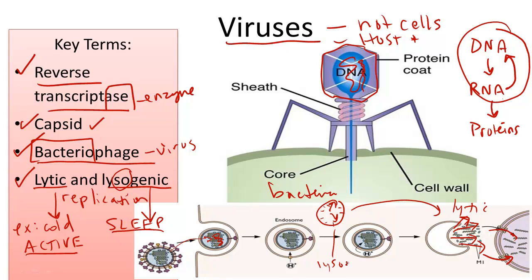So the lysogenic cycle is when the virus is so-called asleep, and it would then enter the lytic cycle. It could perhaps go back to a lysogenic cycle — hence the word cycle. Many viruses are deadly, but most viruses do not even kill the host organism. They simply harm them just long enough so they can multiply and spread to other organisms.